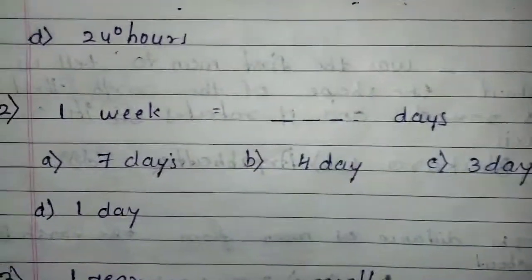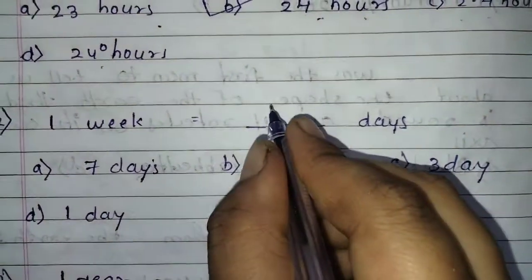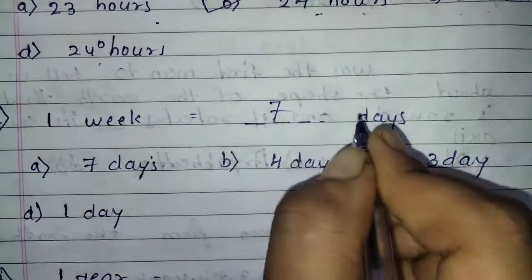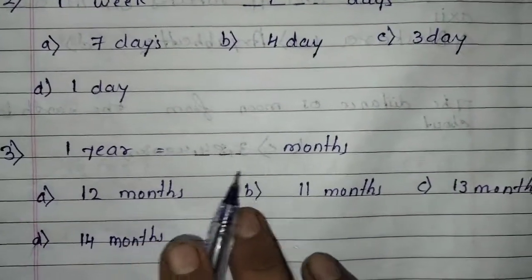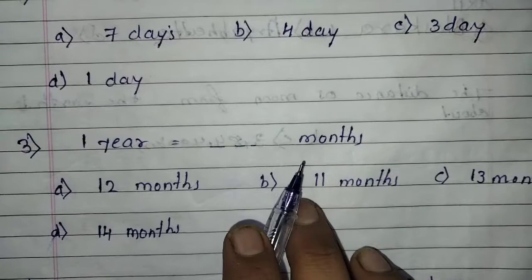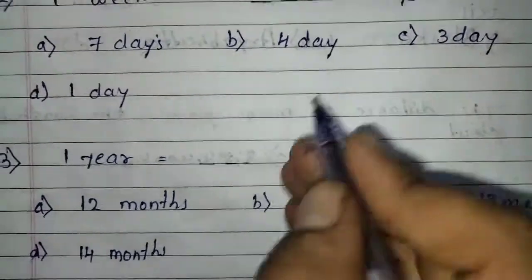One week is equal to how many days? One week is equal to 7 days. Next, one year is equal to how many months? In one year, 12 months are there.